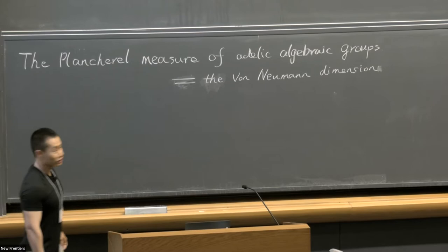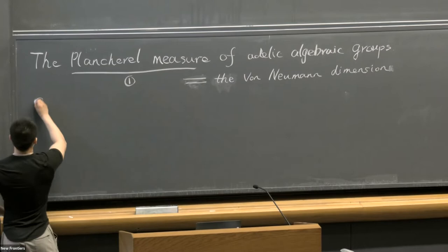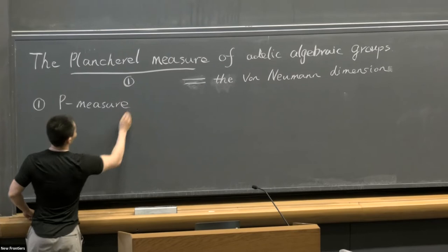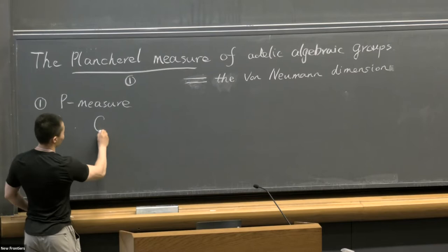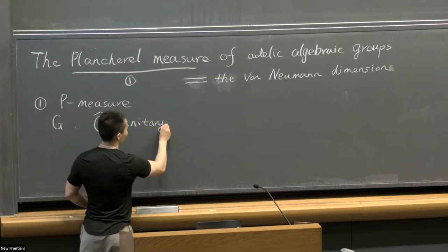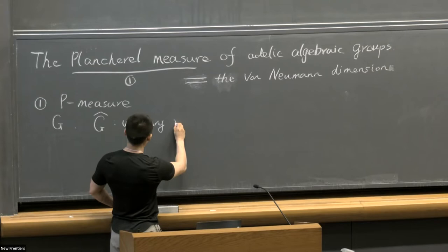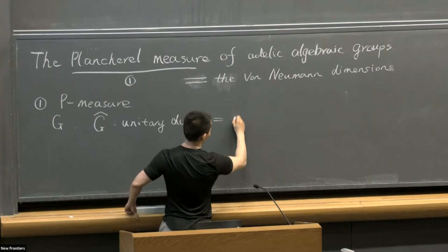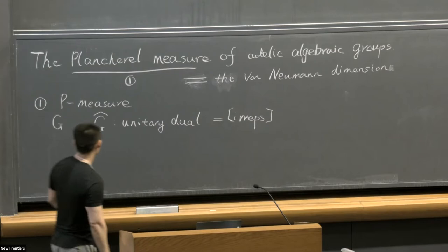So first of all, what is a Plancherel measure? We start with a topological group G. Let G hat be the unitary dual—that is, the equivalence classes of irreducible unitary representations.